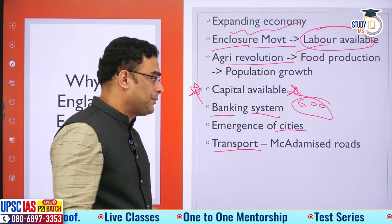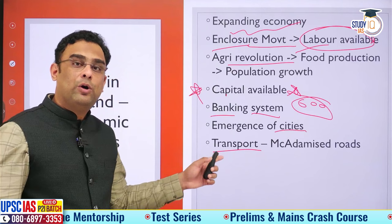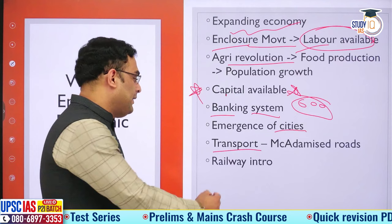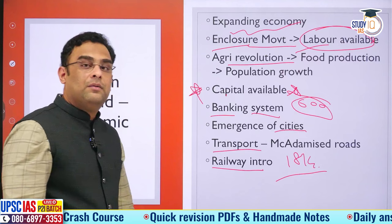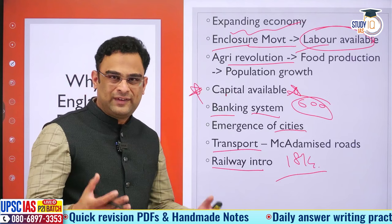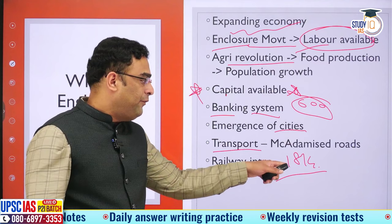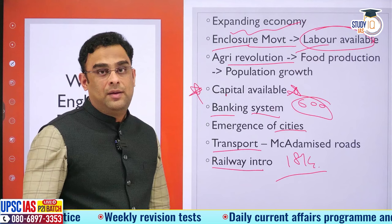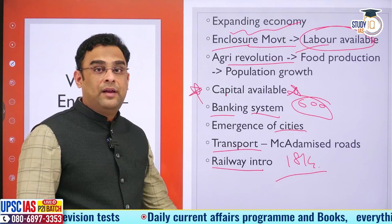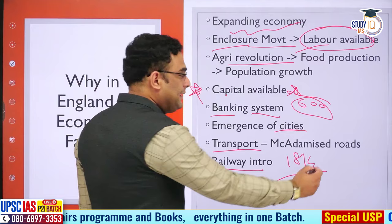New forms of transport also developed — the macadamized road, what in India we call a pakka road. Railways were introduced from 1814 onwards — initially for transporting raw material and coal, which was heavy and bulky. This allowed transporting coal and iron ore over long distances, enabling factories to be set up in distant cities rather than only near mines. Earlier, factories had to be near mines to reduce transport costs, but with railways it was easily possible to carry raw material over long distances.